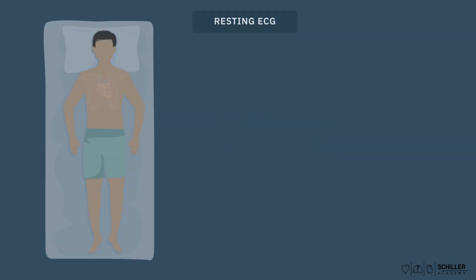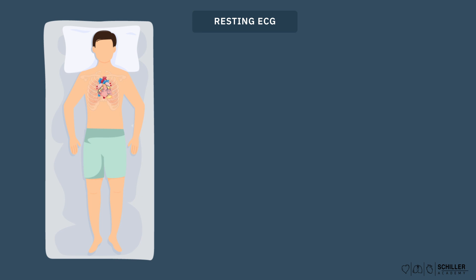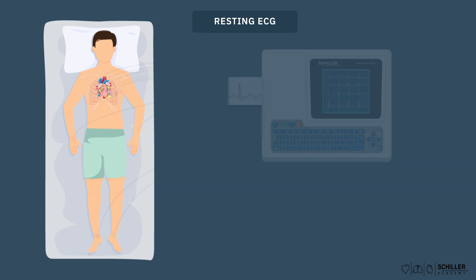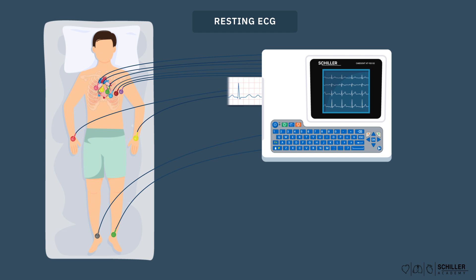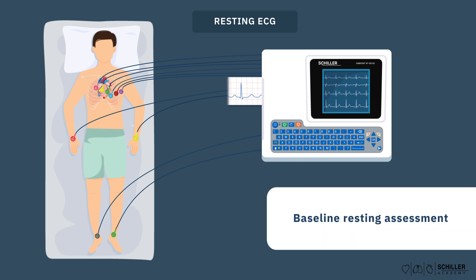During a resting ECG, as the name suggests, the patient is at rest, lying on the back. Electrodes are attached to the patient's chest and limbs to obtain the electrical activity of the heart, for a duration ranging from 10 seconds up to several minutes. Thus, a resting ECG provides a baseline measurement of the heart's electrical activity.